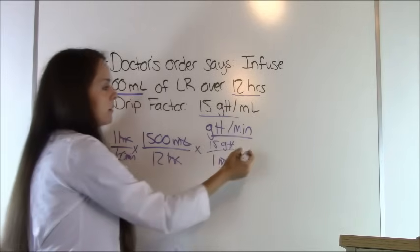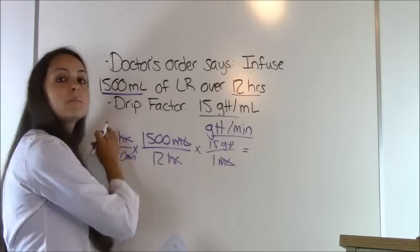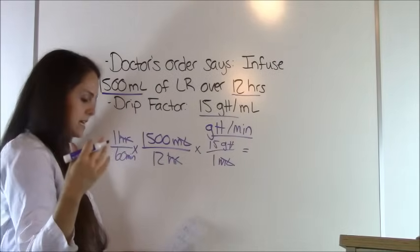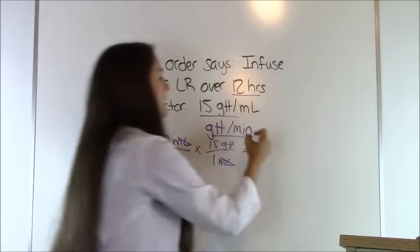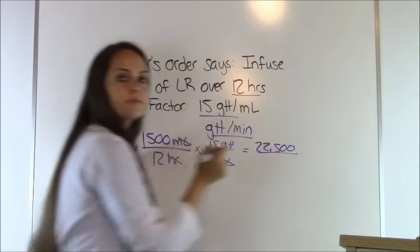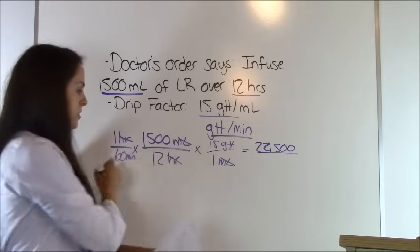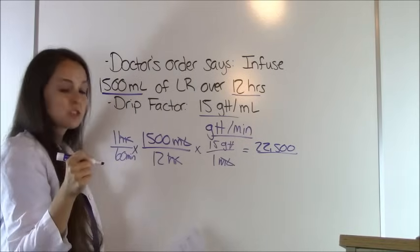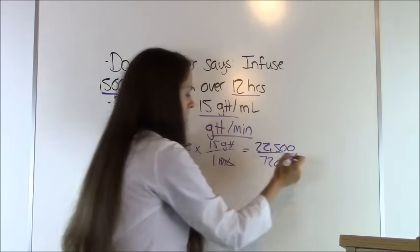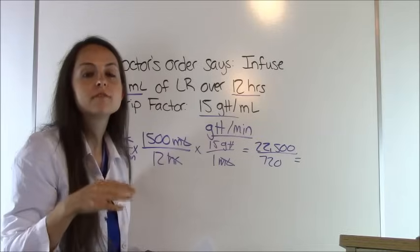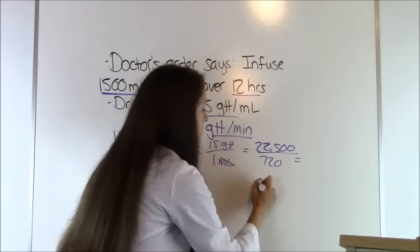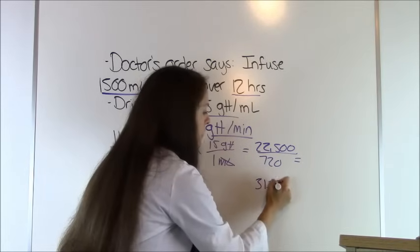We can now solve since we've got to drops per minute. Multiply everything at the top: 1 times 1500 times 15 is 22,500. Then multiply everything on the bottom: 60 times 12 is 720.